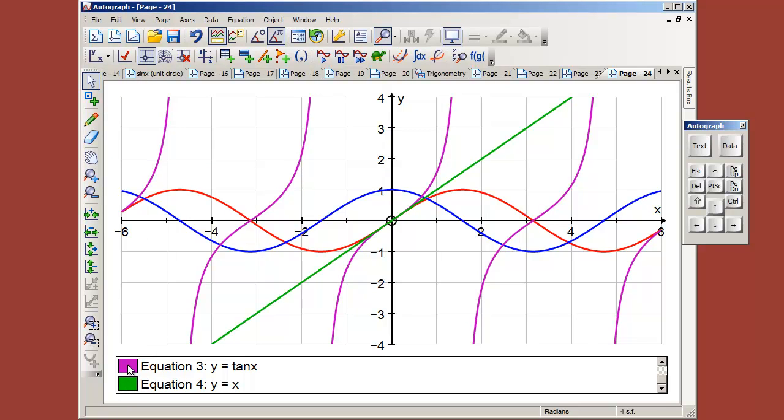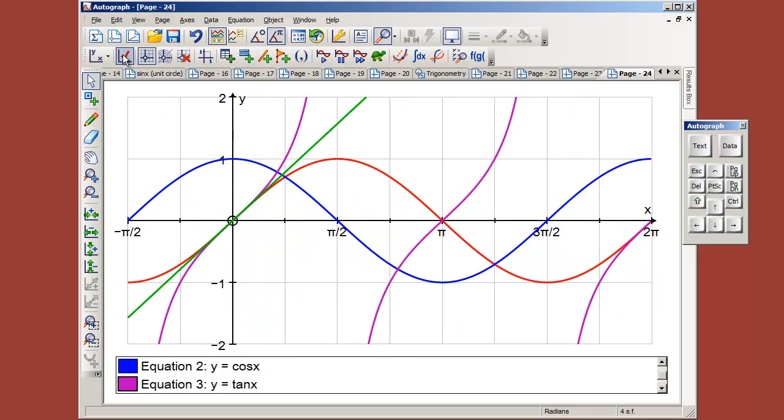Now y equals x was the last one to be entered, so I just need to go back to one of the trig ones to press the red tick. The red tick will know about the trig if we click on one of those.